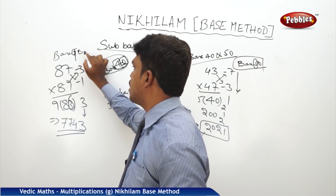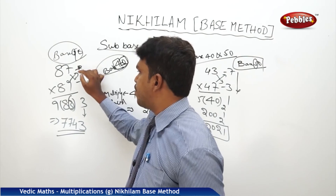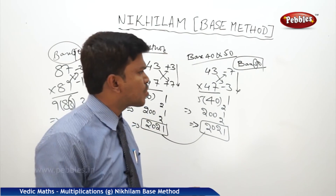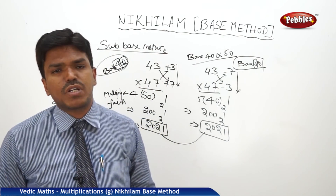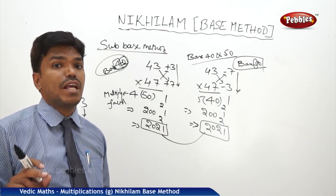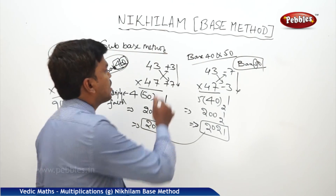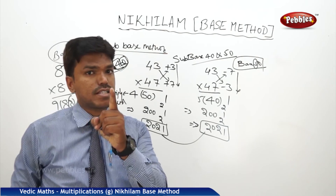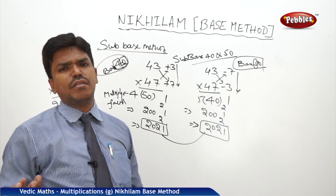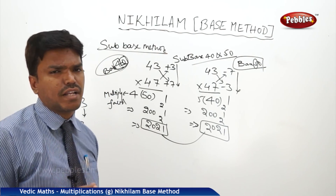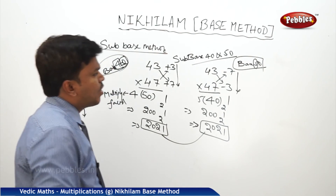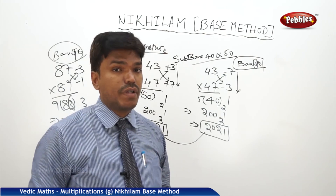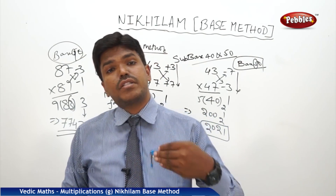We took base 90, but we could also take base 80. With base 80 it would be plus 7 and plus 9. Like this, you can calculate two numbers very near to each other using the sub-base method. The main base is in the form of 10 to the power n, but the sub-base can be a convenient multiple like 40, 50, 80, 90, etc. This method extends to triple digit and four digit numbers too.